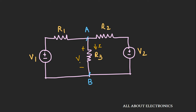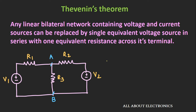Using Thevenin's theorem, you can replace the entire circuit across terminals AB by an equivalent voltage source in series with an equivalent resistance. Any linear bilateral network containing voltage or current sources can be replaced by an equivalent voltage source in series with an equivalent resistance.